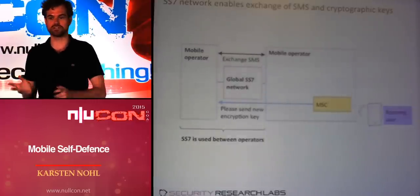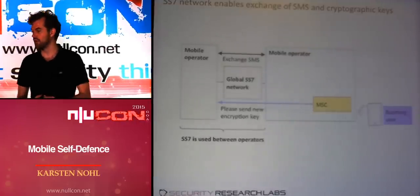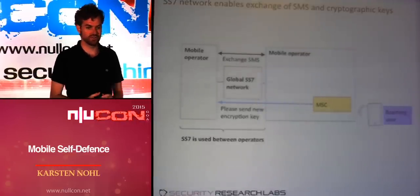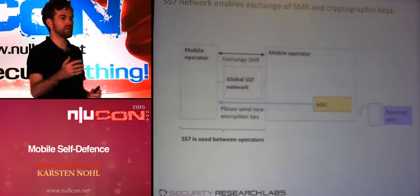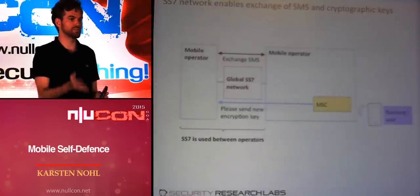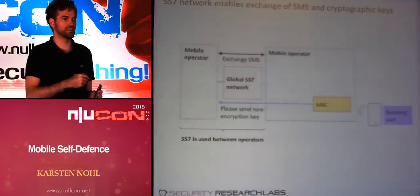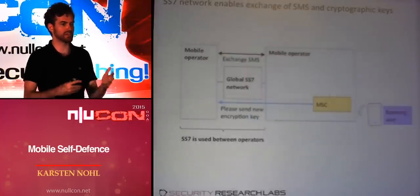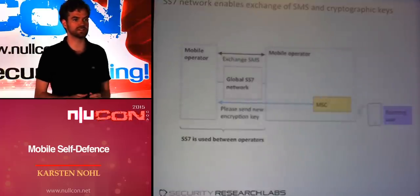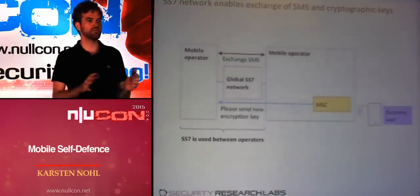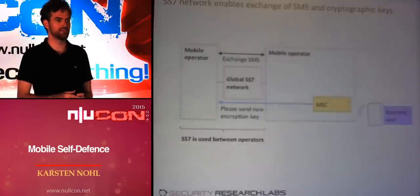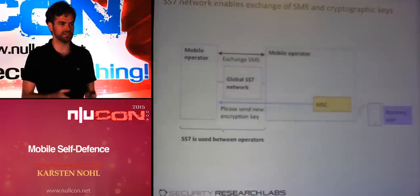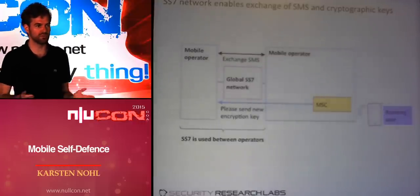SMS traverses SS7 when sent between networks. Also, if you're roaming abroad and you want to prove to the local network that you have a subscription at home so the local network can charge to that subscription, that roaming information is exchanged over the SS7 network. So it is a network separate from the internet, but oftentimes routed over the internet — today through VPNs and so forth — that connects all these mobile telcos.